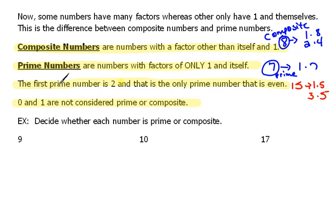And then also 0, well, 0 can be 0 times anything. So 1 times 0 or it can be 5 times 0. But the factors don't really mean anything because anything times 0 is 0.